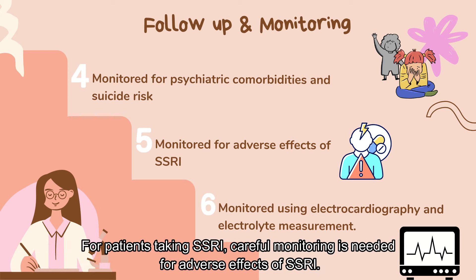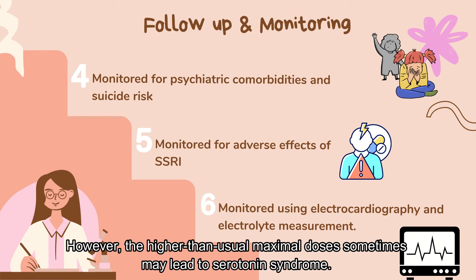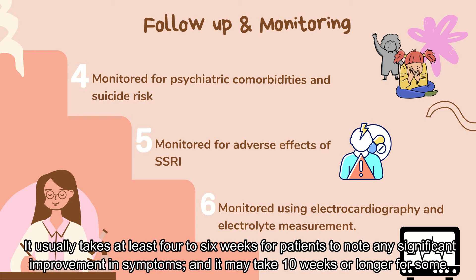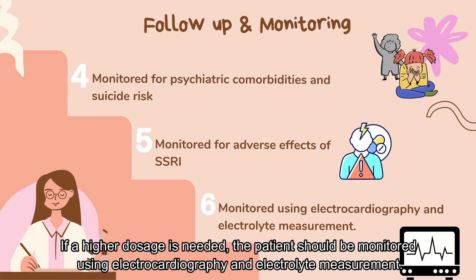For patients taking SSRI, careful monitoring is needed for adverse effects. To achieve optimal response, patients with OCD require a higher dosage of SSRI compared with other indications. However, higher than usual maximal doses sometimes may lead to serotonin syndrome. It usually takes at least 4 to 6 weeks for patients to note any significant improvement in symptoms, and it may take 10 weeks or longer for some. Moreover, there is a concern for QT prolongation in patients taking citalopram. If a higher dosage is needed, the patient should be monitored using electrocardiography and electrolyte measurement.